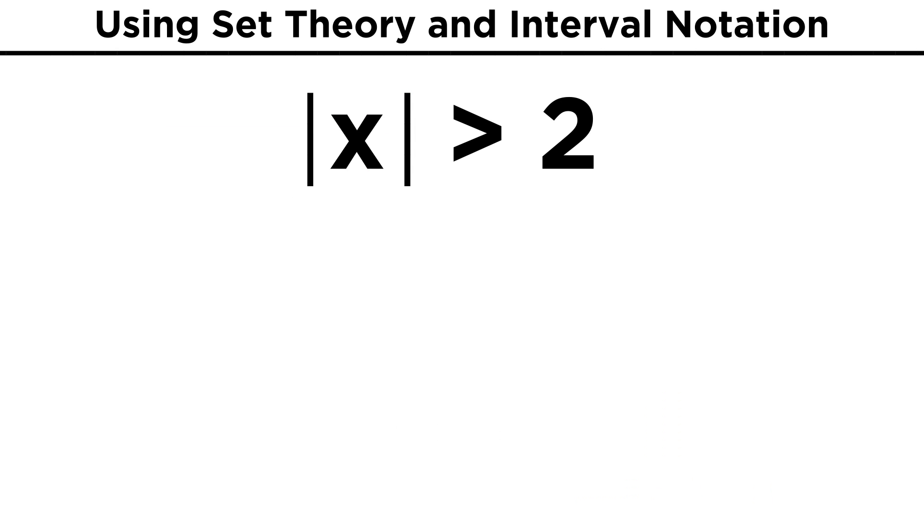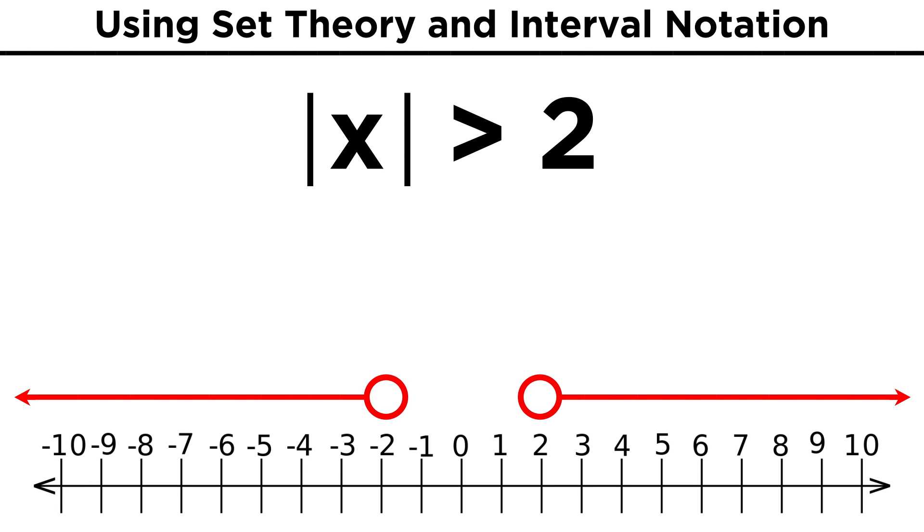As we said, we can use interval notation to represent the solutions of inequalities, and sometimes we will need unions and intersections to do this. Say we are solving absolute value of X is greater than two. Looking at this number line, any number greater than two or less than negative two will be a solution, so the solution of the inequality will be the union of the real numbers from negative infinity to negative two and from two to positive infinity. This is the best way to depict solutions of this nature.